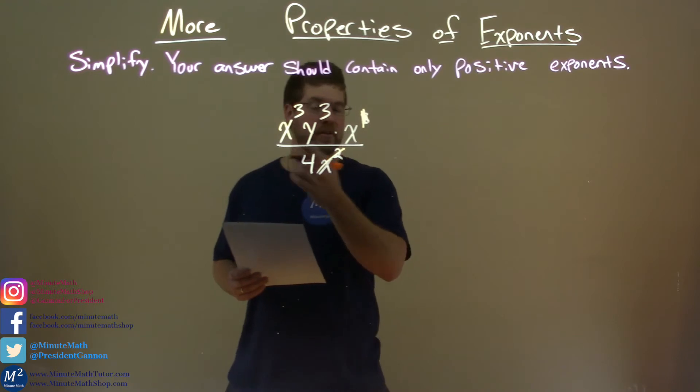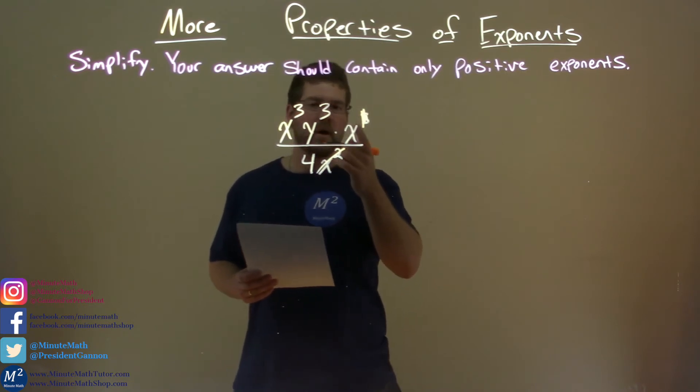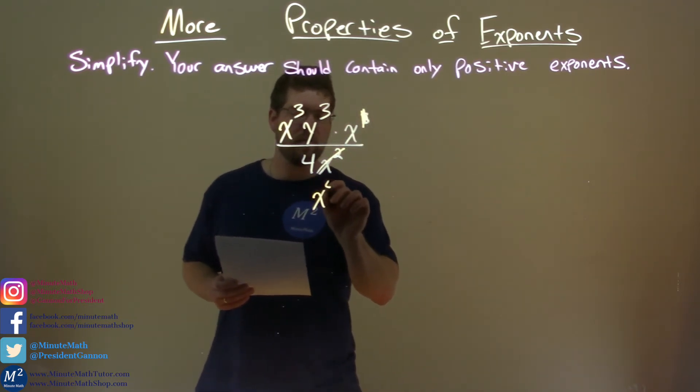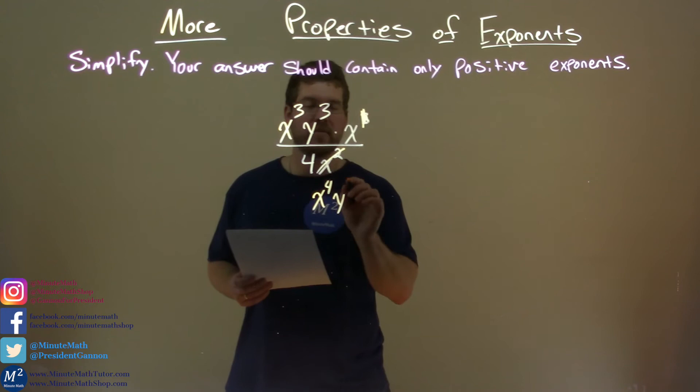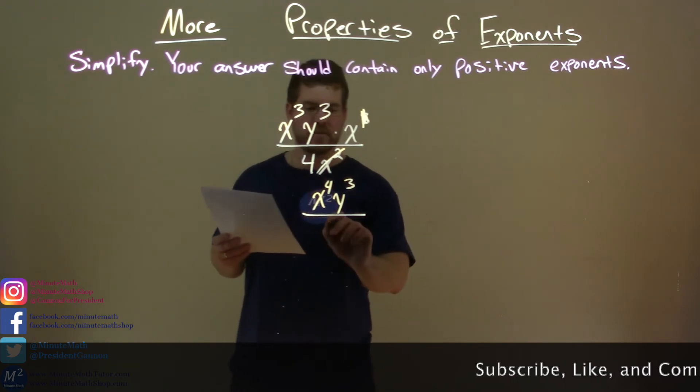So now let's combine our like terms in the numerator. x to the third times x, add the exponents, there's a 1 there, 3 plus 1 is 4. So we have x to the fourth power. y has nothing else that can be combined with it, y to the third power, all over our denominator, which is just 4.